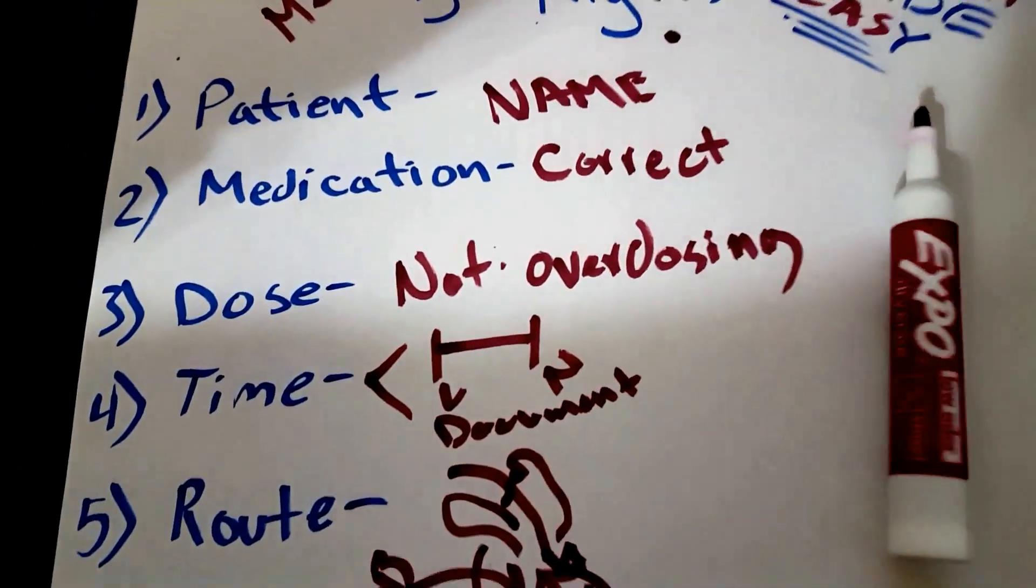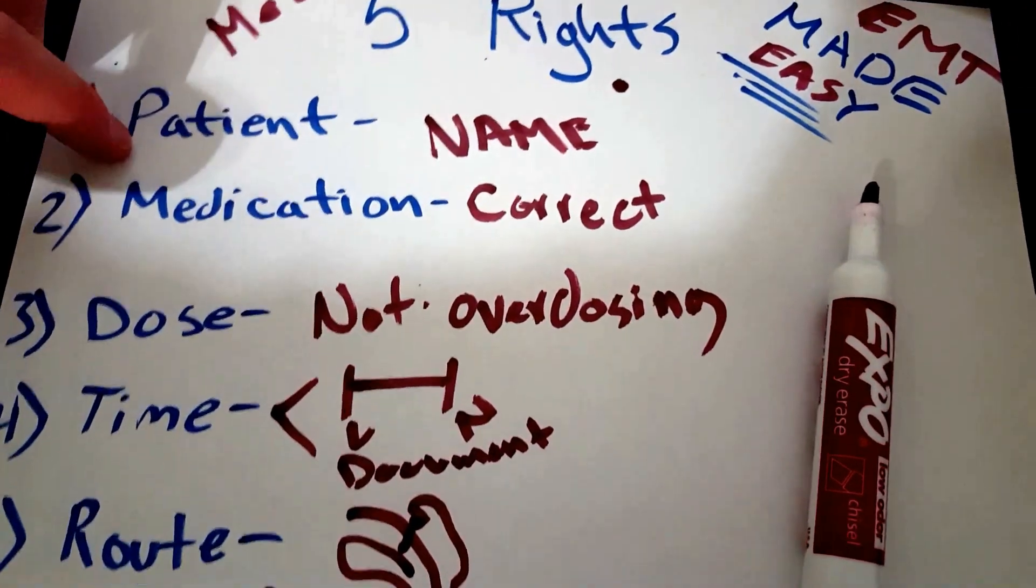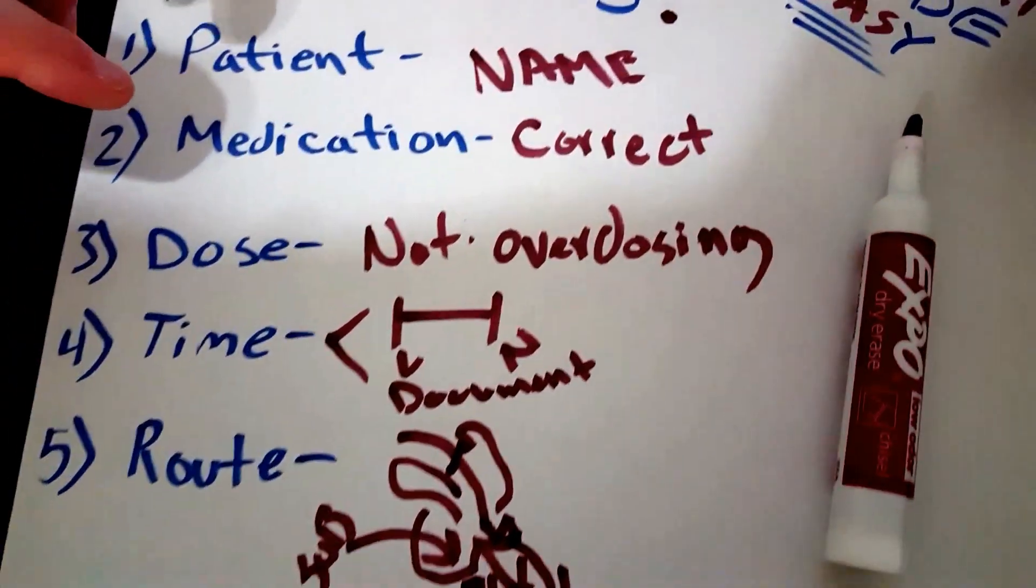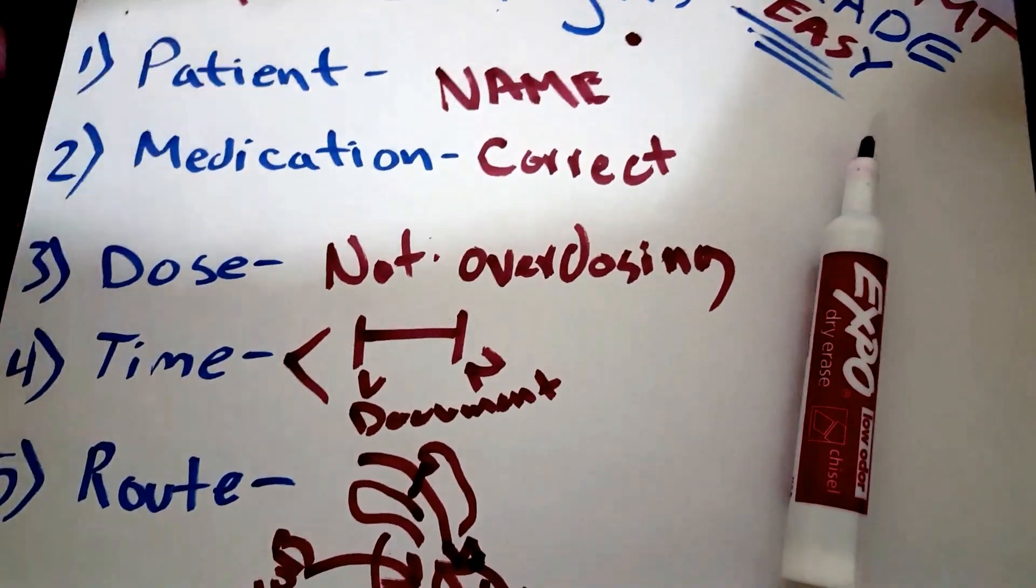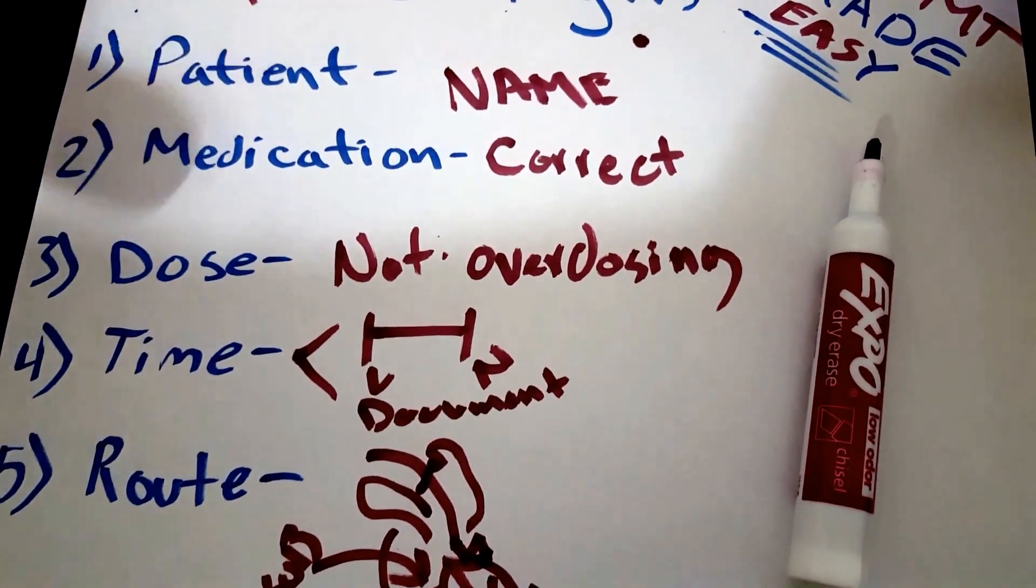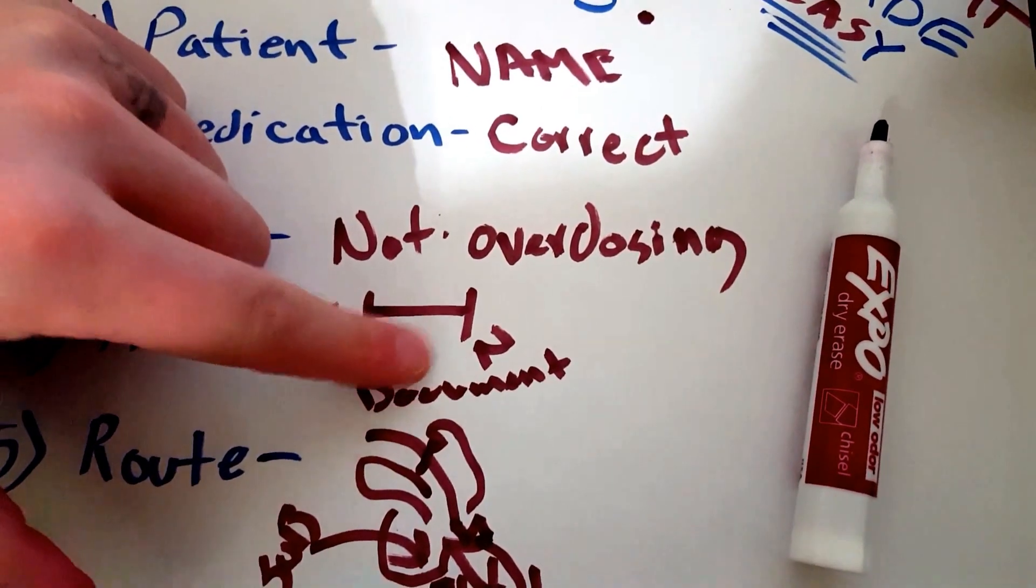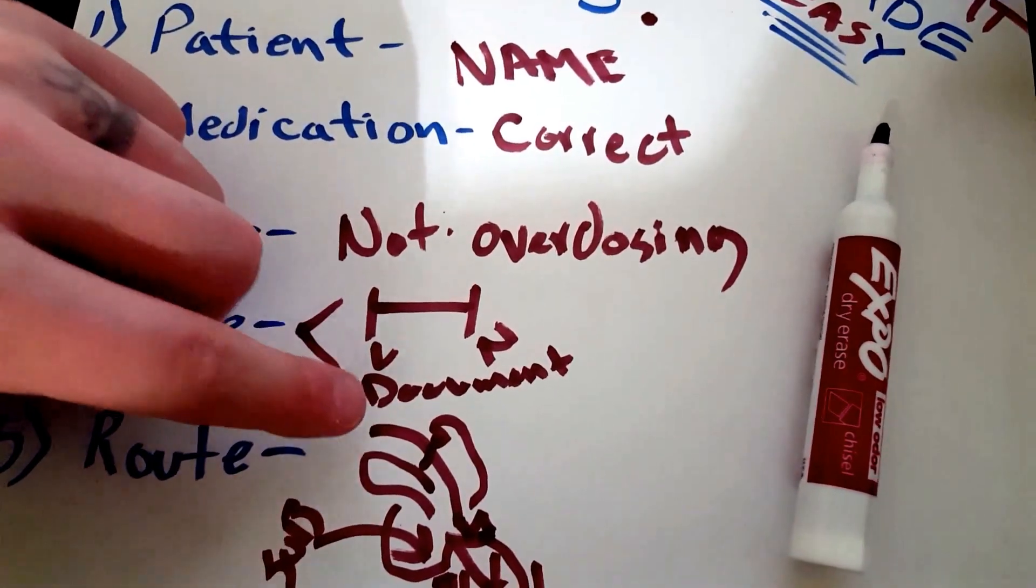Not much going on here. You just want to make sure it's for the right patient, so make sure the name's on there. The right medication for the right symptoms, the right illness. The dose—you don't want to overdose them or underdose them. Make sure you're not giving too much or too little. Time—make sure there's enough time in between each dosage, whatever is recommended for that medication. And then you want to document the time when it was given.